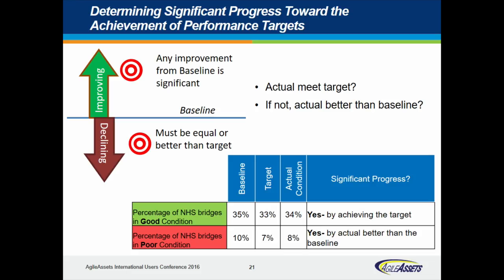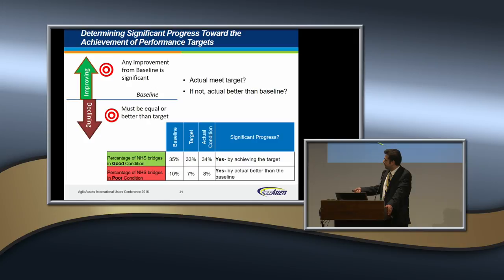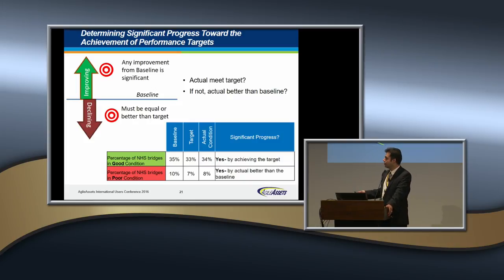Here is an example from FHWA slides on how to determine significant progress toward performance targets. The state set a baseline for good condition at 35 percent, a target of 33 percent, and after two years achieved 34 percent — still achieving the target. This means that even if you let your network lose some good bridges, you still achieve the target and don't get penalized. But is that a good practice?